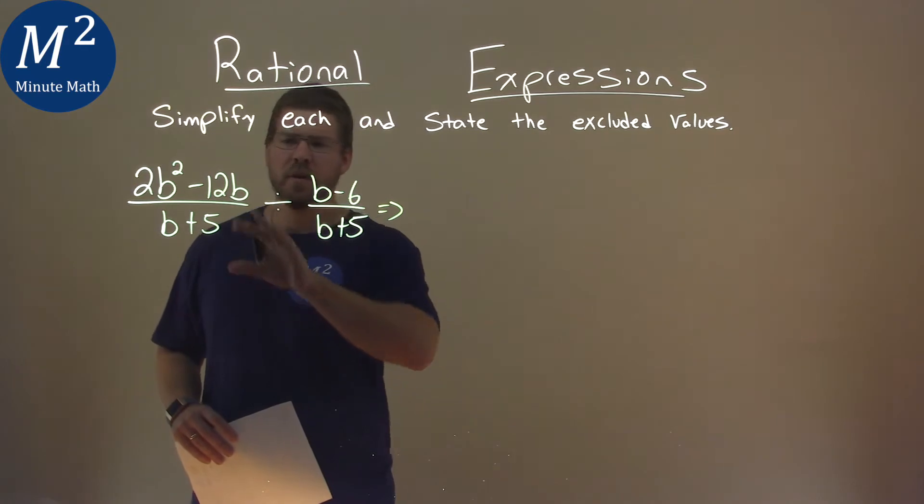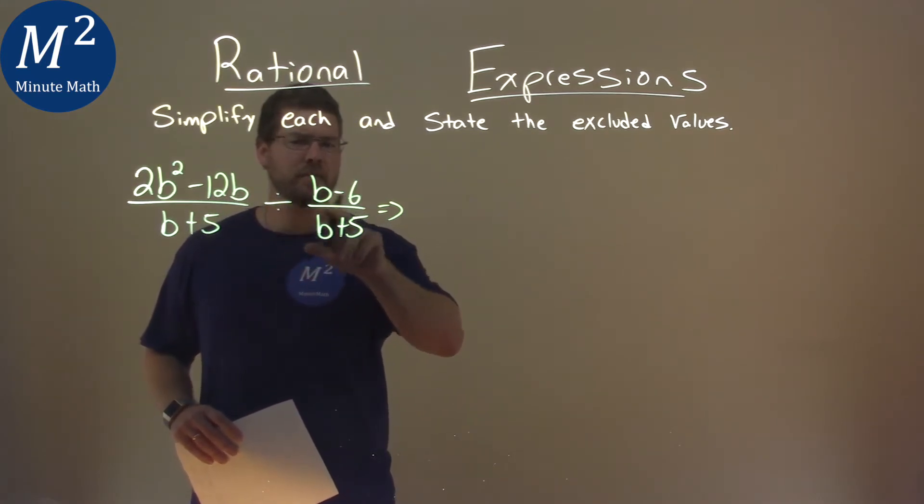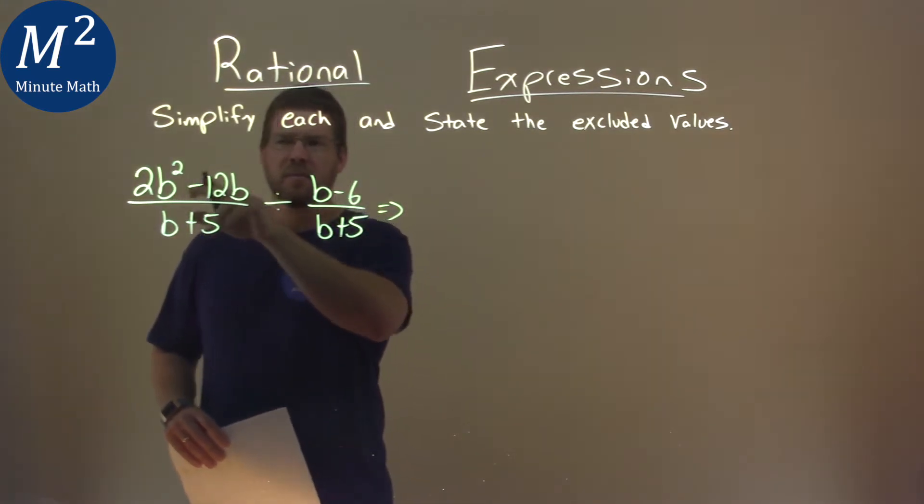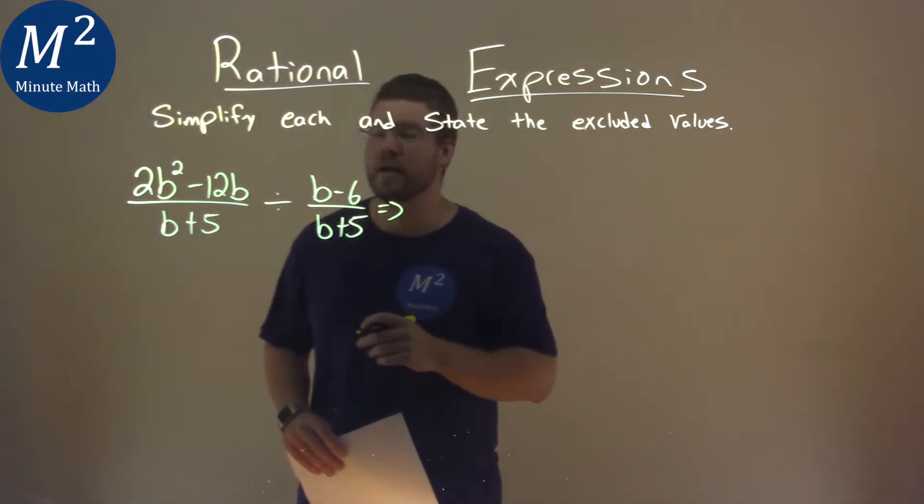Well, first thing is, I'm going to try to rewrite this. I'm going to flip this fraction over to be multiplication, and I'm going to factor that 2b squared minus 12b.